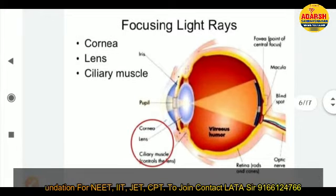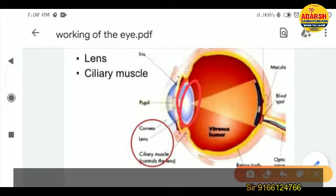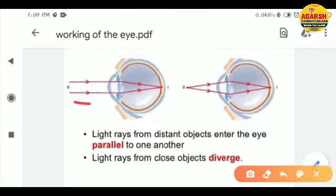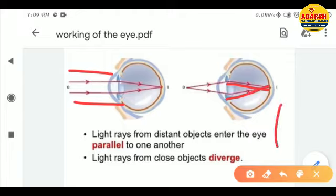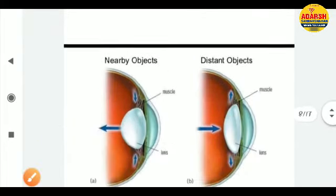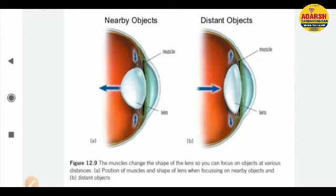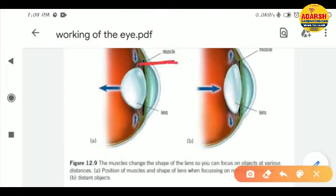The lens is the bluish part visible in the diagram. Light rays from a distant object come in parallel — as you can see in the first diagram. Light rays from close objects diverge when they reach the lens. The diagram shows how the shape of the lens changes — the ciliary muscles are clearly visible here.